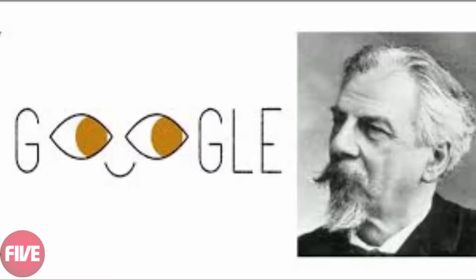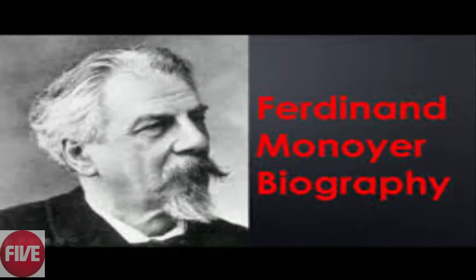4. Monnoyer died in 1912 at age 76. Monnoyer died on July 13, 1912. According to Lyon Medical in 1912, members of the Faculty of Medicine at the University of Lyon followed his casket to his grave in a procession to honor his work.